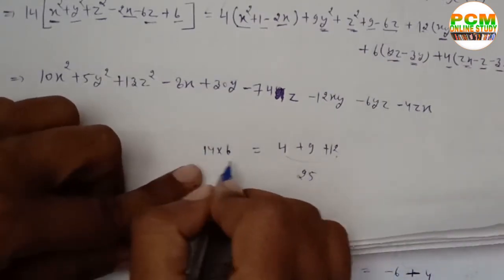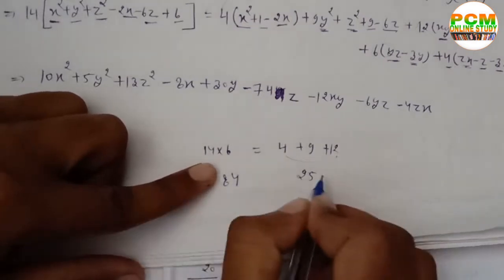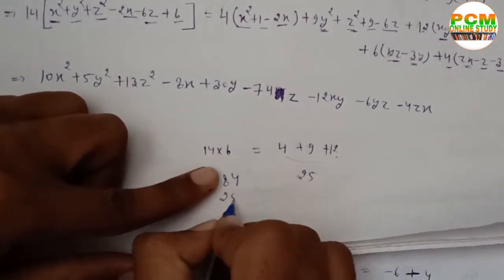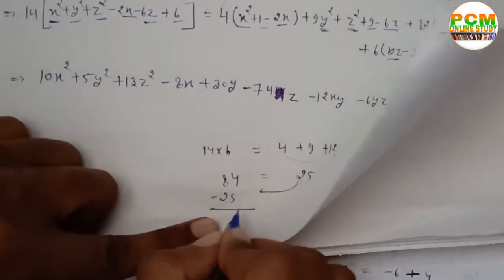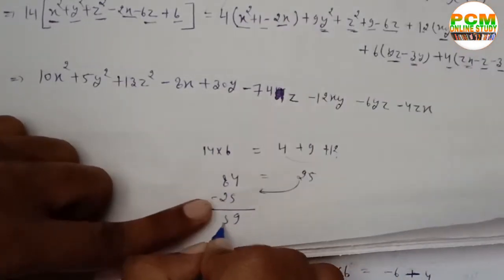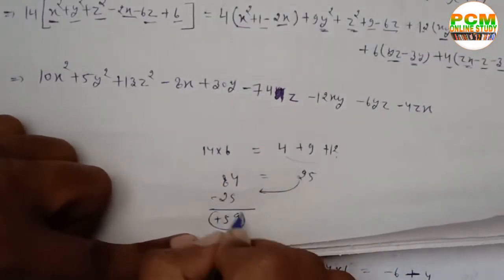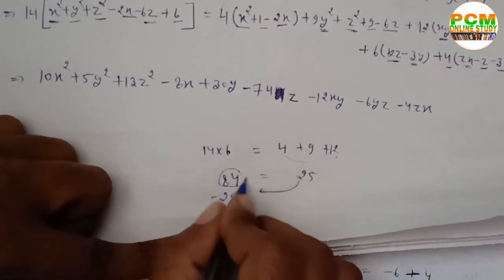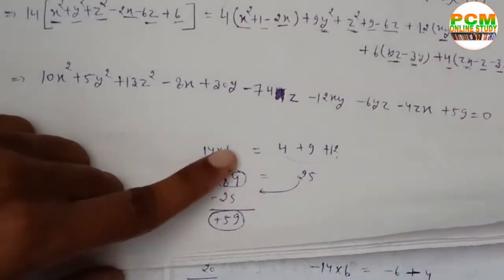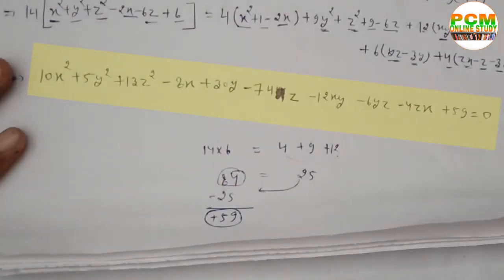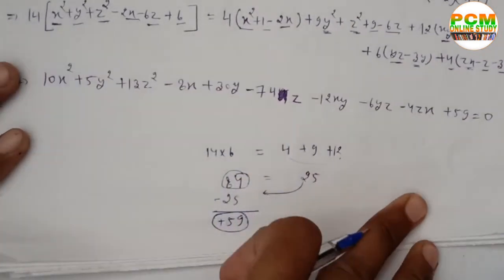The constant terms: 14×6 = 84 on the left, and 4×1+9+12+25 = 50 on the right, giving a net constant of +59. So the final equation of the cylinder is 10x²+5y²+13z²−8x+30y−74z−12xy−6yz−4zx+59 = 0. I will meet you in the next video with a new equation. Goodbye and Jai Hind!